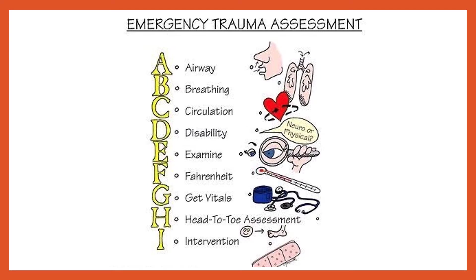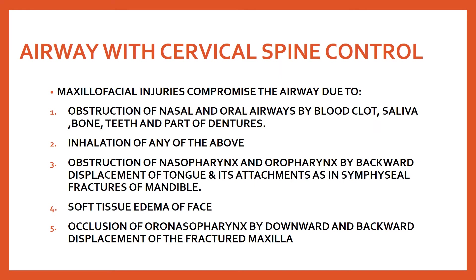F (Fahrenheit) means checking the patient's temperature. G means checking all the vitals of the patient — blood pressure, pulse, and respiratory rate. H involves head-to-toe assessment of the patient, and I is to intervene. The main focus will be on explaining A, B, C, D, and E.